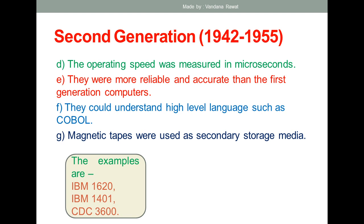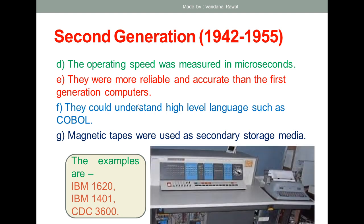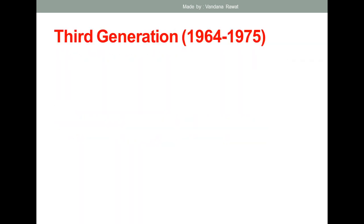This is a picture of the IBM 1620. As you can compare this image with first generation computers, the size of second generation computers is smaller in comparison to the first generation. Now, the third generation of computers had a time period from 1964 to 1965.